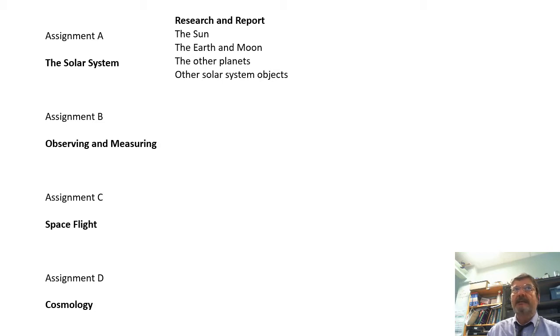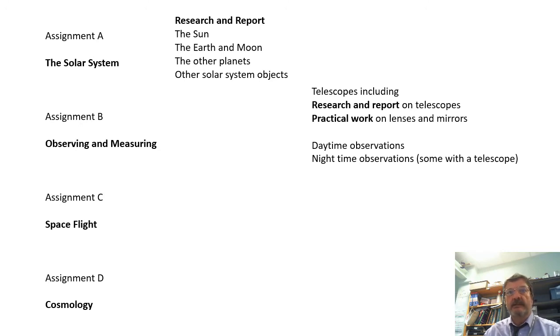Assignment A also covers other things in the solar system. Assignment B is about telescopes—research and report on telescopes, practical work with lenses and mirrors. Very important, there are daytime observations, which mostly involve the Sun, and nighttime observations, which will involve you using a telescope for some of them. Whether you have your own telescope, can borrow one, or go out with the rest of the class for an observing session.